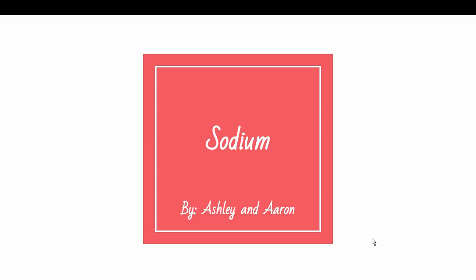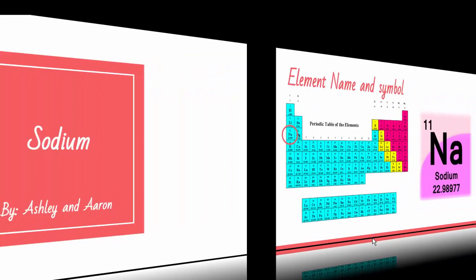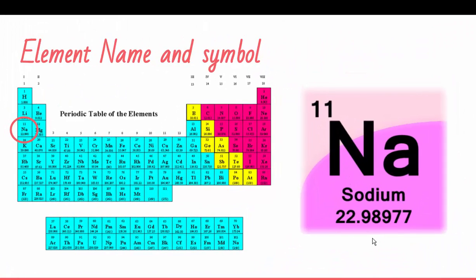Sodium by Ashley and Erin. Element name and symbol. As you can see in the periodic table, the element that is circled, which is Na, stands for sodium. And you can also see a close-up of the sodium element.